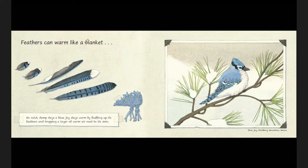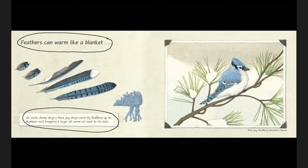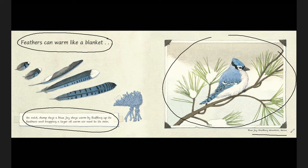Now I want to notice the different chunks on this page. I first see a phrase up here at the top. The letters are bigger, and it looks kind of like a heading. And then I see another chunk down here — I've got this text that's in a box, and this text is giving me more information about how the blue jay uses its feather like a blanket. The other big chunk is an illustration with a label. So the big chunks on each page are a heading at the top, a caption inside of a box, and an illustration.